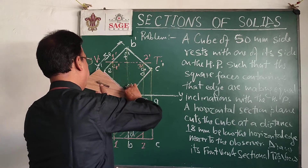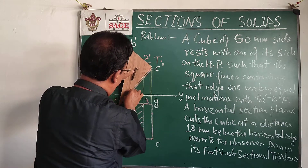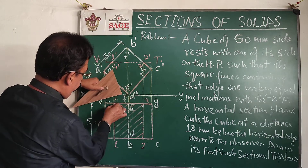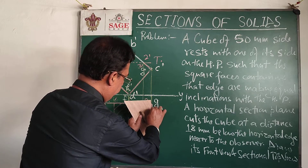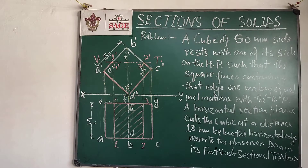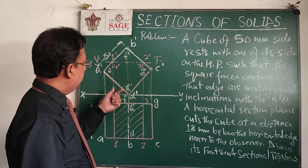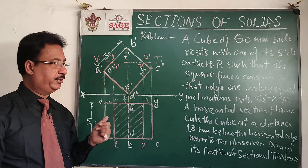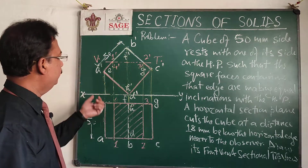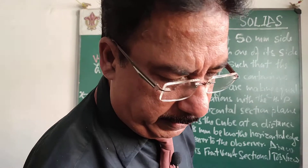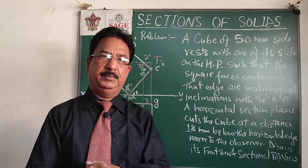Draw section lines at 45 degrees, equally spaced, inclined to XY. In the front view, the lower part will remain, so I will darken that part. This is one of the simplest problems. Since the section plane is parallel to the HP, in the top view we are getting the true shape of the section. The required drawings are the front view and the sectional top view — I hope you understand the problem, thank you very much.